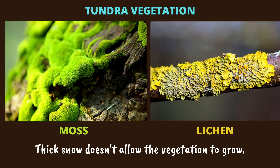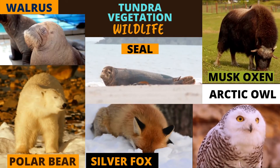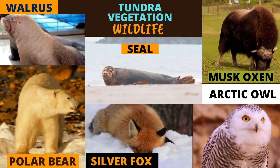Tundra vegetation includes moss, lichen, and small shrubs. These areas are covered by snow throughout the year, and thick snow does not allow the vegetation to grow.